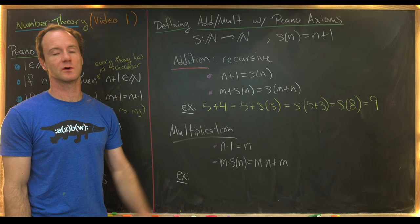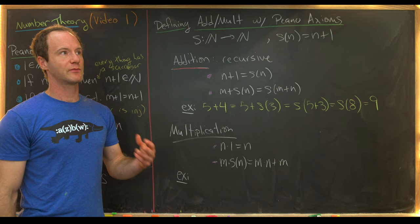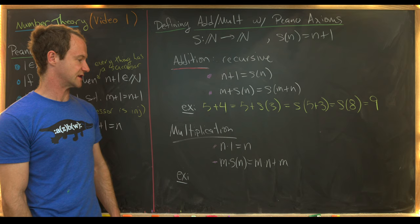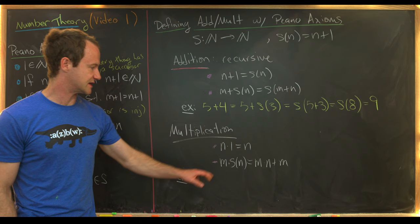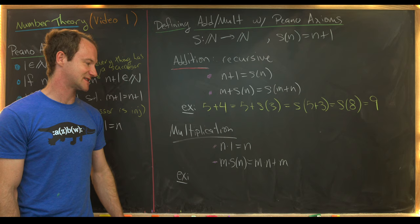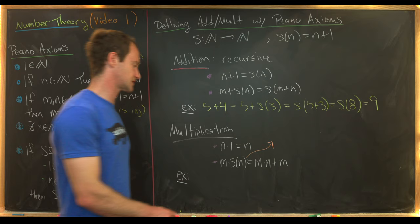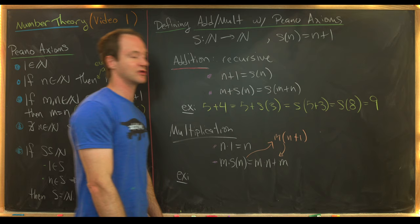Now let's look at multiplication. A priori, we don't know how to multiply two natural numbers like three and six, but we can define multiplication via the successor function recursively. We define it so that one is the multiplicative identity: n times one equals n. Then m times the successor of n equals m times n plus m. Notice that if we write the successor of n as n plus one, this looks a lot like just the distributive rule.